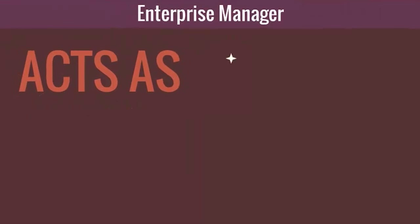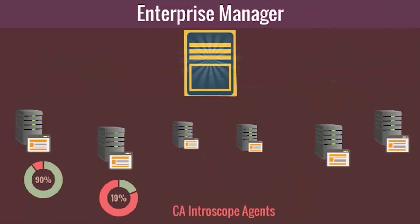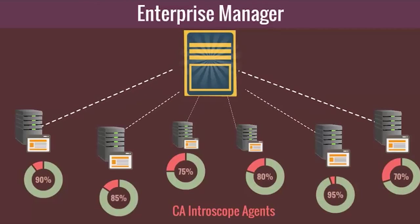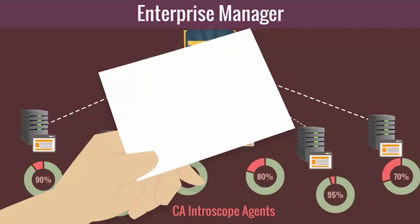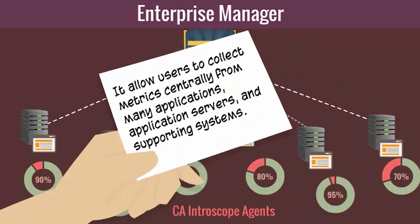The Enterprise Manager acts as the repository of CA Introscope performance metrics. It receives performance metrics from one or more CA Introscope agents and allows users to collect metrics centrally from many applications, application servers, and supporting systems.